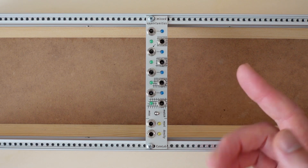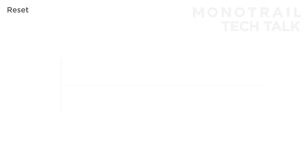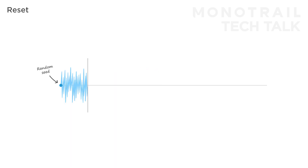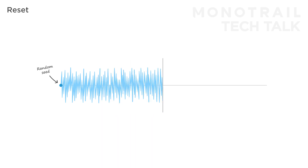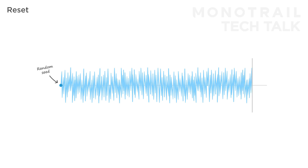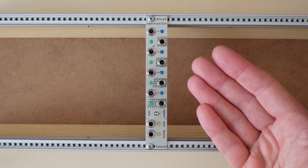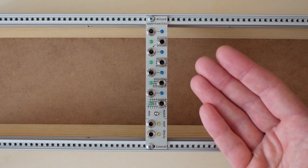Finally, there's the reset input. This input utilizes the fact that the module uses a random seed generated from ambient noise when you power up the module, to generate a pseudo random sequence to make decisions. At the falling edge of a gate or trigger, the module resets the sequence to the random seed it started with, creating the same pattern. This allows for some creative patches, but be aware the seed is changed every time you power on the module, creating a different sequence. When you feed the reset input a longer gate, the module will hold the state of each gate as long as the input is high, before resetting the sequence at the end of the gate.